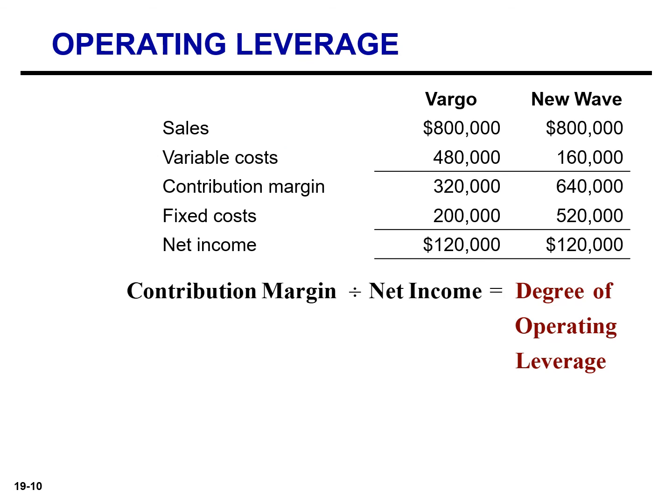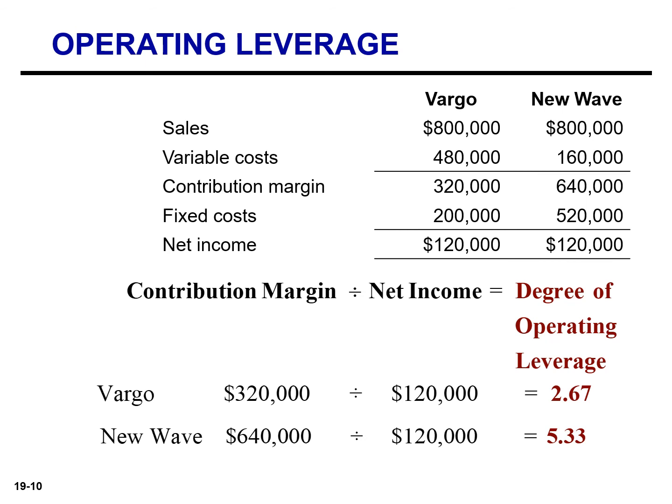Let's calculate operating leverage for Vargo and New Wave. If we take the net income of $120,000 and divide that into the contribution margin of $320,000, we'll get an operating leverage of 2.67. Similarly, for New Wave, the operating leverage is 5.33. If both companies experience a 10% decrease in sales, Vargo's net income will decrease by 26.7% — taking the operating leverage of 2.67 and multiplying by the 10% decrease in sales. New Wave will decrease by 53.3%.